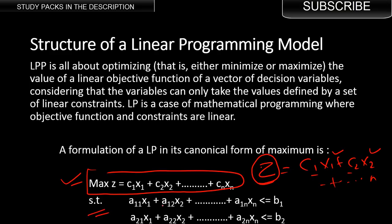We want to maximize z with respect to certain constraints. These constraints are equations — either equal to something, less than something, or less than or equal to something. For example, the linear combination a11·x1 + a12·x2 should be less than or equal to b1. Given all constraints, we find the maximum value of g. That is the layman's understanding of a linear programming problem.